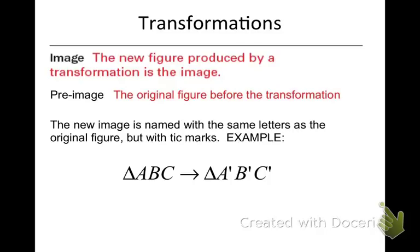And again, we have some notation that we're going to use for this. The new image is named with, usually anyway, is named with the same letters as the original figure, but we have these little tick marks. And we read them a special way. This particular thing says that triangle ABC is transformed, that arrow means transformed,